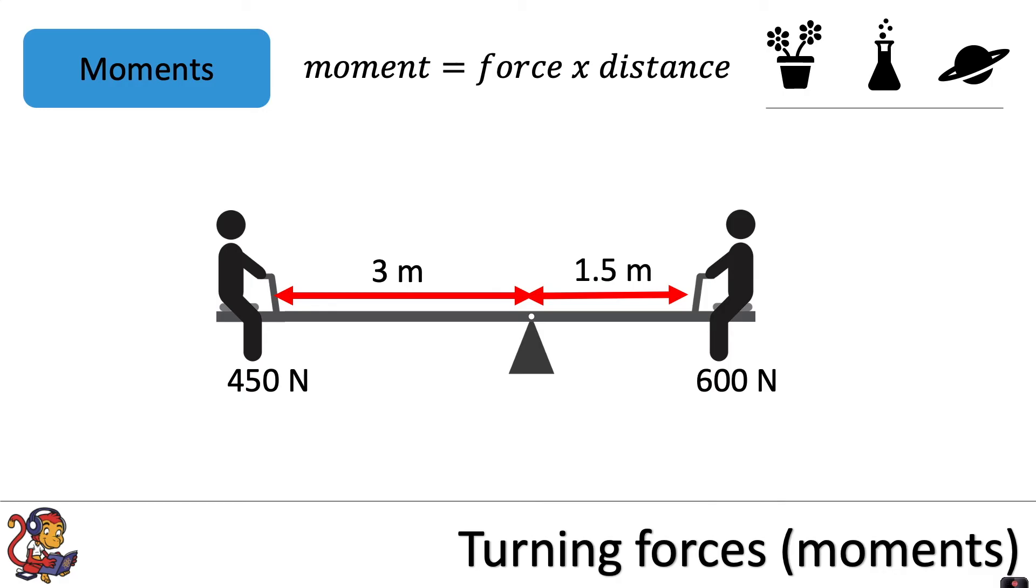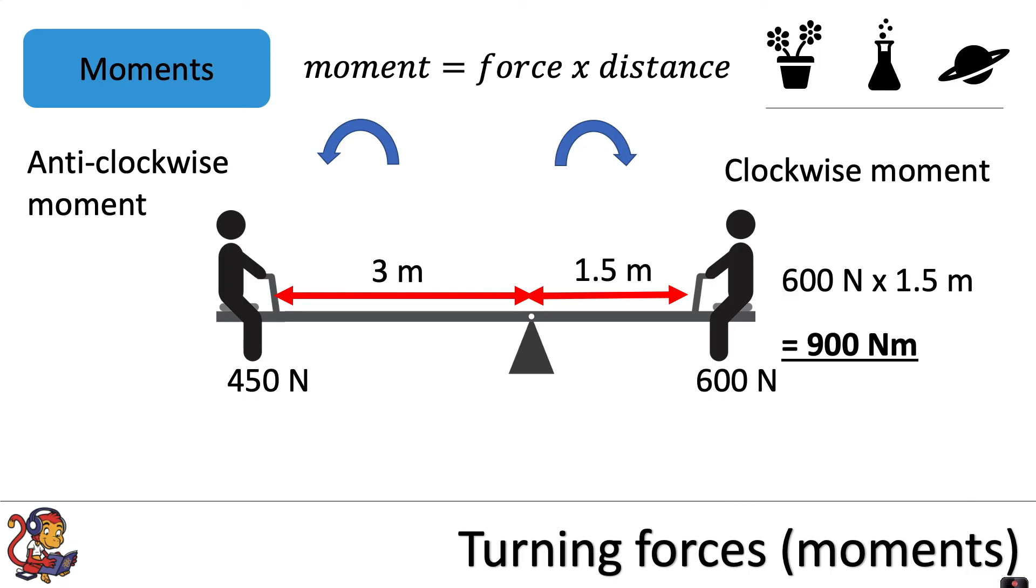We need to work out the moment on either side of the pivot. For the clockwise moment, we do force times distance and get 900 newton metres. For the anti-clockwise moment, we get 1350 newton metres.